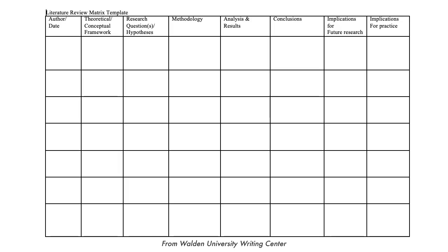The review matrix is a document where you include bibliographic information of a source and describe different aspects of each source. This can include the source's major themes, methodologies, conclusions, strengths and weaknesses, and how the source connects to the overall body of knowledge. There's no single correct way to create a review matrix, but the overall purpose is that it allows you to easily compare, contrast, and make connections between different sources. This can help you identify common themes in the literature, and it will make it easier for you to actually write the literature review itself.